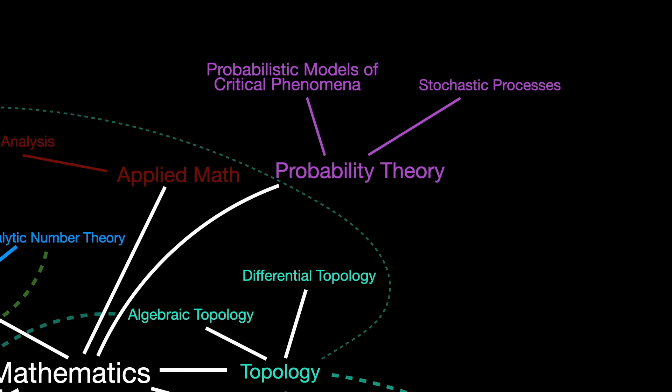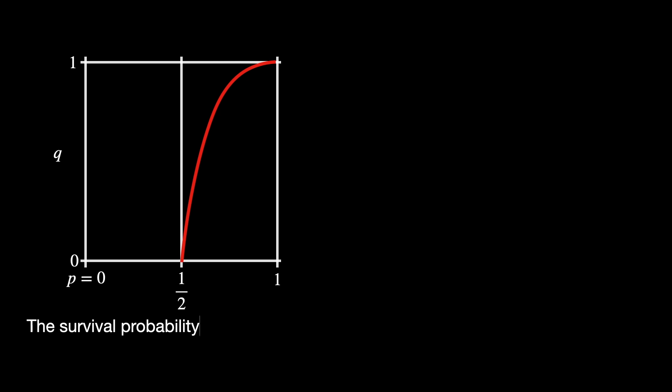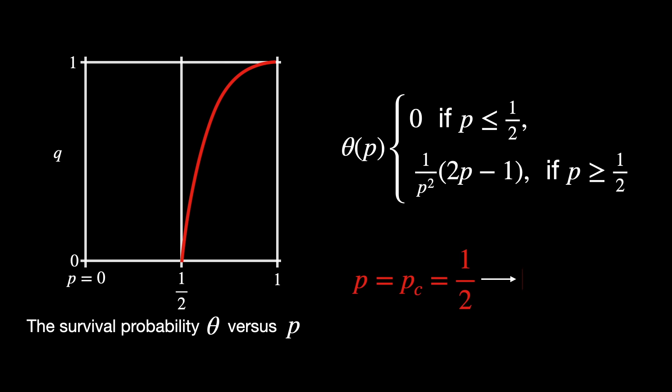Probabilistic models of critical phenomena. This field mostly uses probabilistic methods to model and analyze phenomena that involve uncertainty and randomness. Specifically, it focuses on transitions and changes that occur at critical points.